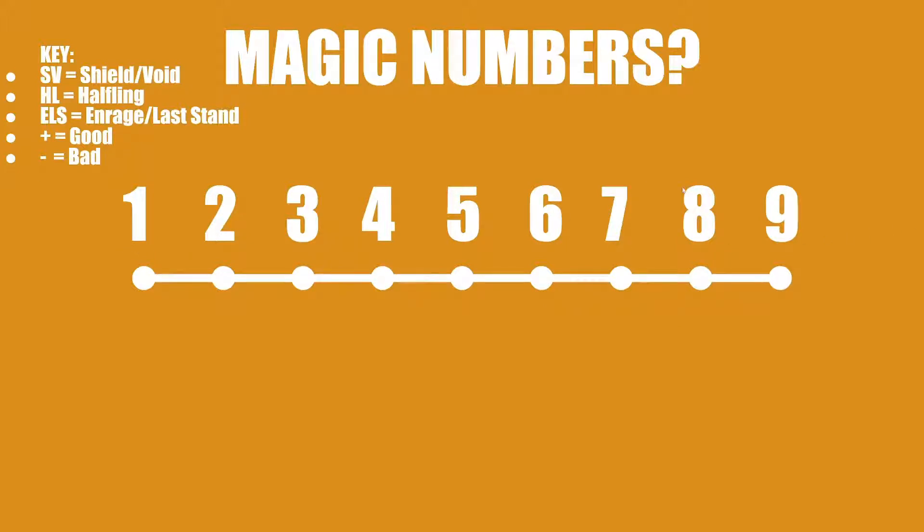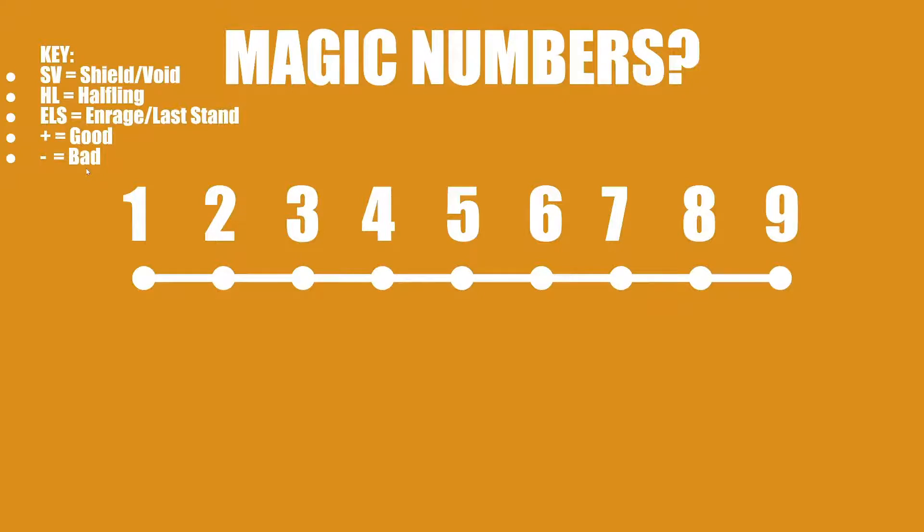There's a key up here: SV is Shield/Void, HL is Halfling, ELS is Enrage or Last Stand. These two work very similarly. Plus means that it's good for the ability, and minus means that it's bad for the ability.